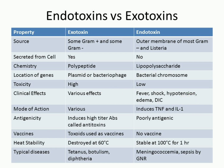Endotoxin causes fever, shock, hypotension, edema, and DIC. Exotoxin induces high-titer antibodies called antitoxin. Endotoxin is poorly antigenic.